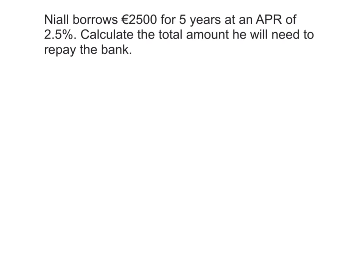Our first example is a nice straightforward one. Niall borrows £2,500 for five years at an APR of 2.5%. We need to calculate the total amount he will need to repay the bank. Writing down what we know: our principal P is £2,500, our time T is 5 years, our APR is 2.5%, and what we're trying to work out is the final amount F.